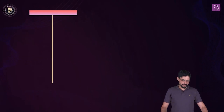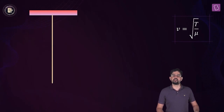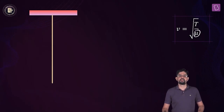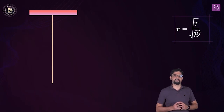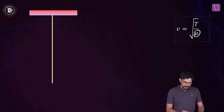Let's assume that this is the rope. We know that the wave speed is going to be equal to the square root of T divided by mu. And mu is constant. So if you want to find out what happens to the speed of the wave, we have to determine what happens to the tension within the rope. As you go up, the tension keeps on increasing.